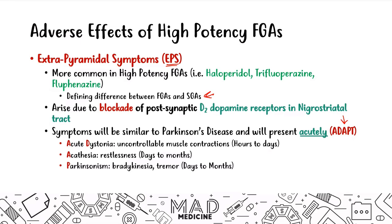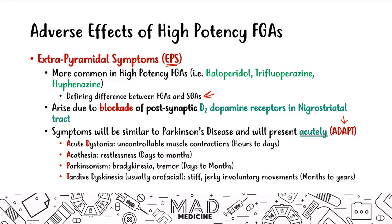The final EPS symptom is tardive dyskinesia, which is orofacial and results in stiff, jerky, involuntary movements. This presents after months to years of chronic use of high-potency first-gen antipsychotics. On Step 1, a patient with a history of schizophrenia presenting with a hand tremor lasting weeks should make you think of EPS from high-potency first-gen antipsychotics — and haloperidol is often the first-line medication for schizophrenia.